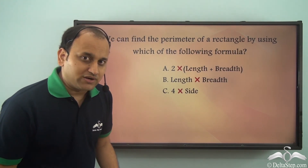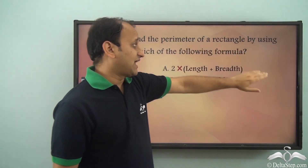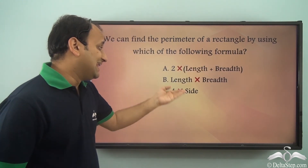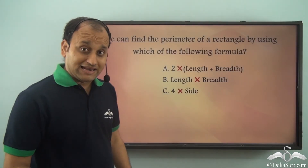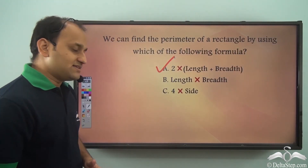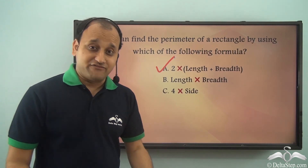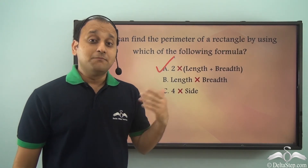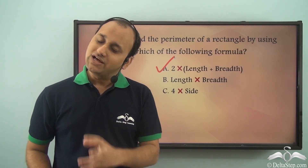Now that you know how to calculate the perimeter of a rectangle, can you answer this question: we can find the perimeter of a rectangle by using which of the following formulas — 2 into (length plus breadth), length into breadth, or 4 into side? The answer is 2 into (length plus breadth). Whatever size rectangle you have, you can always calculate its perimeter using the formula 2(L + B), which gives the length of the outer boundary.